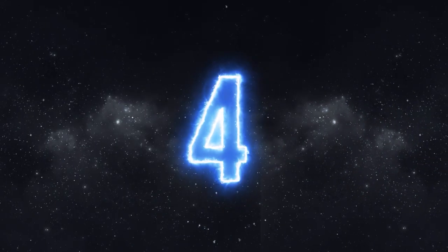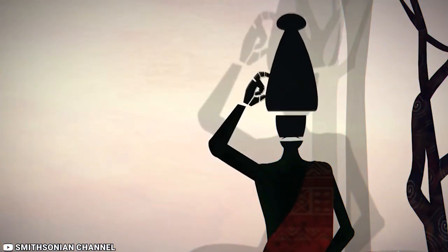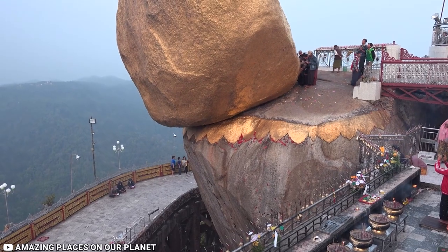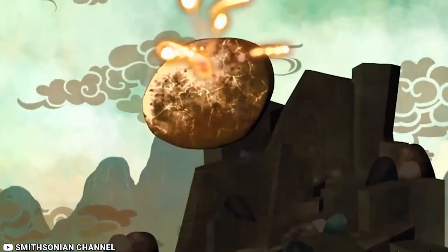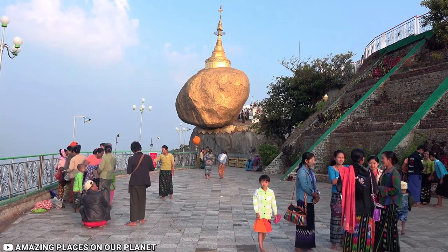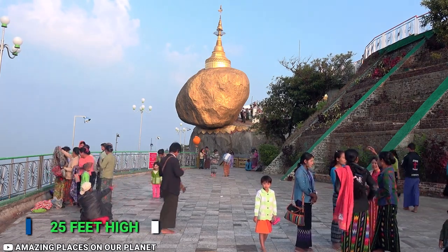Number 4, Golden Rock. Kyaiktiyo Pagoda, also known as the Golden Rock, is a massive granite boulder that has been placed atop Mons State, Burma, for as long as records of the area exist. The Golden Boulder, which is 50 feet in diameter and 25 feet high, is hard to miss. It appears to be about to roll down into the vast Myanmar landscape from Mount Kyaiktiyo's cliff edge.